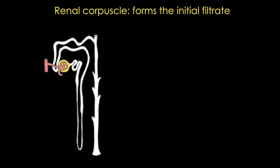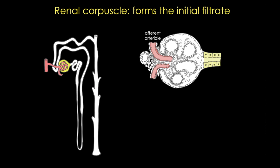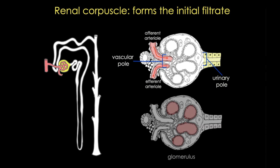Highlighted in color you see the corpuscle, often called Bowman's capsule, which forms the initial filtrate — the first stuff actually removed from the blood. In red you can see the afferent arteriole, the vessel that brings blood to each corpuscle, and then the efferent arteriole, which carries the blood out. Together we call this the vascular pole. At the opposite end, a channel carries the initial filtrate into the proximal tubule — that's called the urinary pole. The plexus of capillary loops arising from the afferent arteriole is termed the glomerulus.